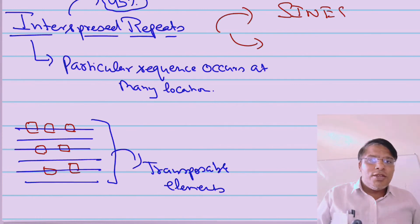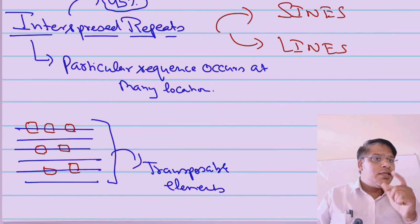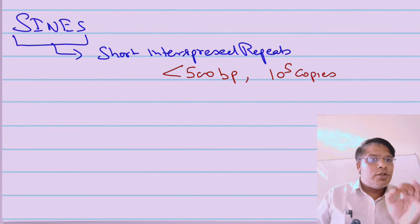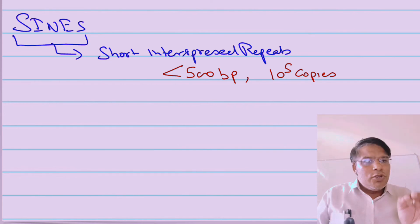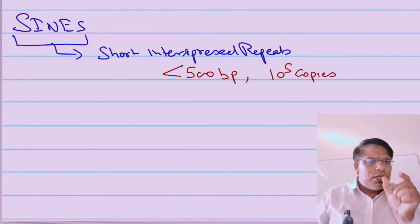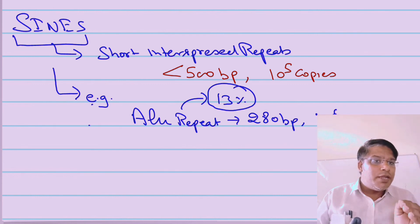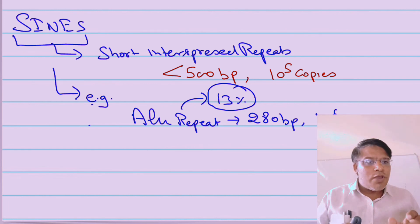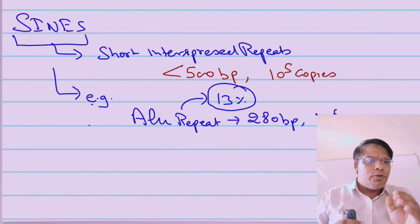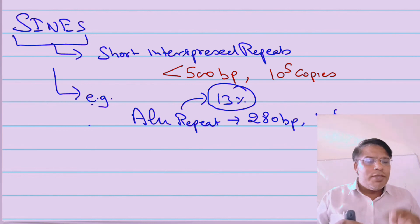Interspersed repeats are present in 45% of the human genome and can be of two types: SINEs and LINEs. SINEs stands for short interspersed repeats — they have a length less than 500 base pairs and can have up to 10^5 copies within the genome. One of the best examples of a SINE sequence is the ALU repeat — a sequence of 280 base pairs present approximately 10^6 times in the genome.